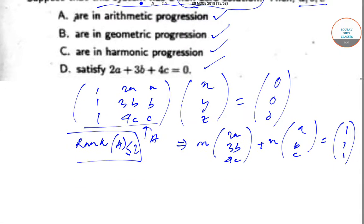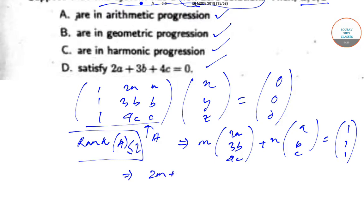Upon solving this, we get (2M + N)a equals 1, (3M + N)b equals 1, and (4M + N)c equals 1.